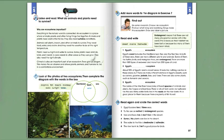Unit 5, Lesson 2, Page 96, Exercise 6. Listen and read: What do animals and plants need to survive? Why are ecosystems important? Everything in the natural world is connected. An ecosystem is a place where animals, plants, and other living things live together.